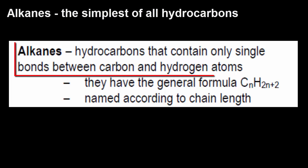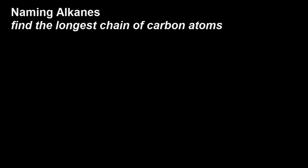Alkanes are what are known as the simplest of all hydrocarbons. They contain only single bonds between carbon and hydrogen atoms. They have general formulas as shown there, and they're named according to chain length. So to name an alkane, find the longest chain of carbon atoms.